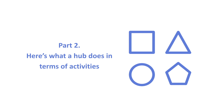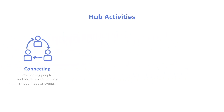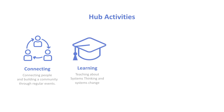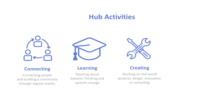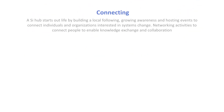So these are the activities and the general categorization of activities that the hub may do. There's a whole set around connecting — connecting people to build a community through regular events, meetups, and presentations. Second, there's a lot around learning, teaching about systems thinking and systems change. Then creating — working on real-world projects, design, innovation or consulting services. And finally change — actually trying to do systems change, transformational change, creating collaborations for systems-level change.